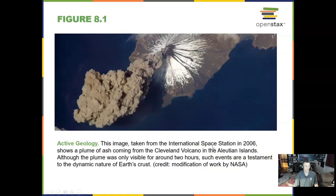Here we have a volcano seen in 2006 by the space station, and this is up in the Aleutian Islands off of Alaska. There are a lot of these volcanoes up there along the Pacific Ring of Fire.